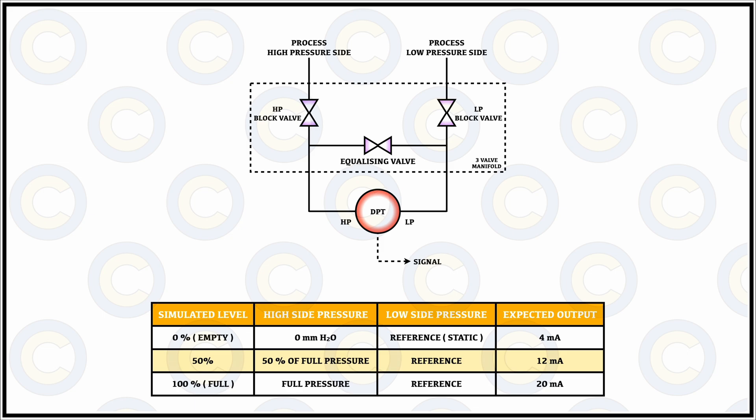That is how we are using the zero and the span setting to adjust in case if there are slightly erroneous values that are displayed during the calibration. And why I am emphasizing is because this is the entire main point of calibration process for the DP transmitter.